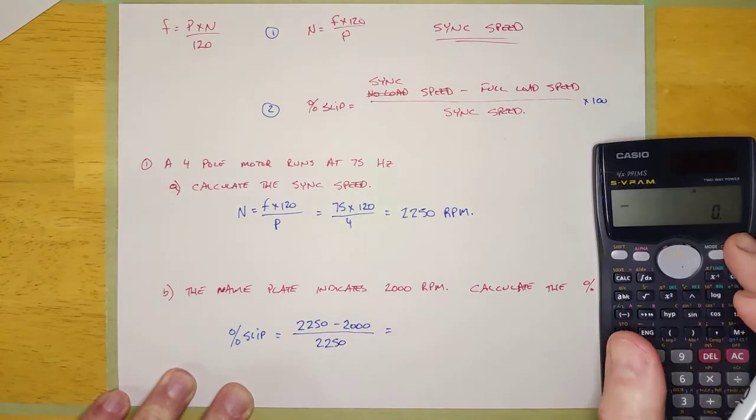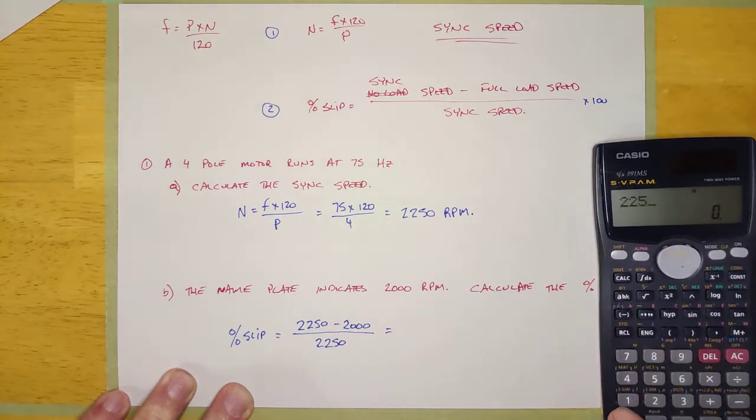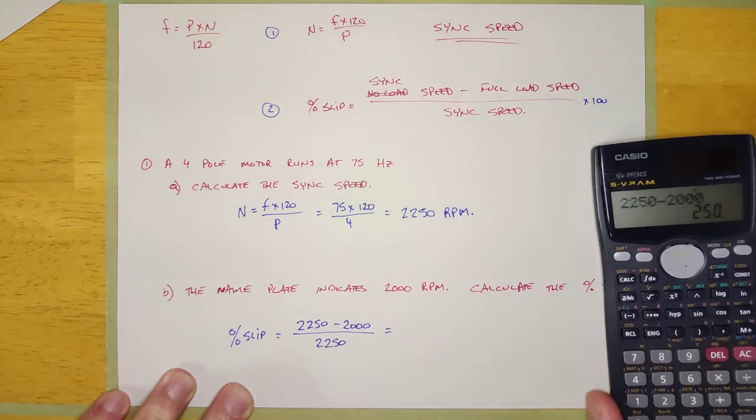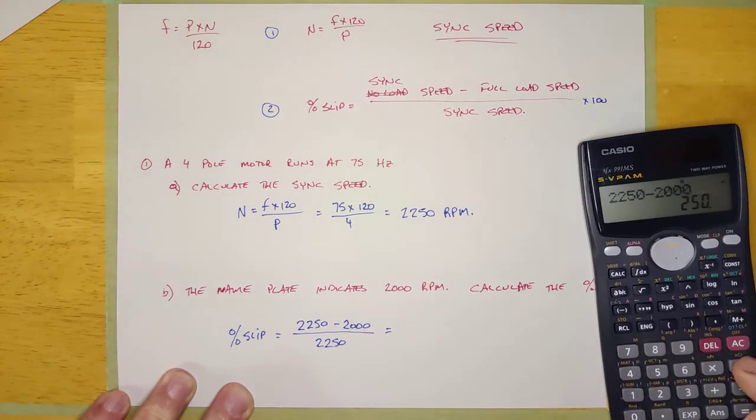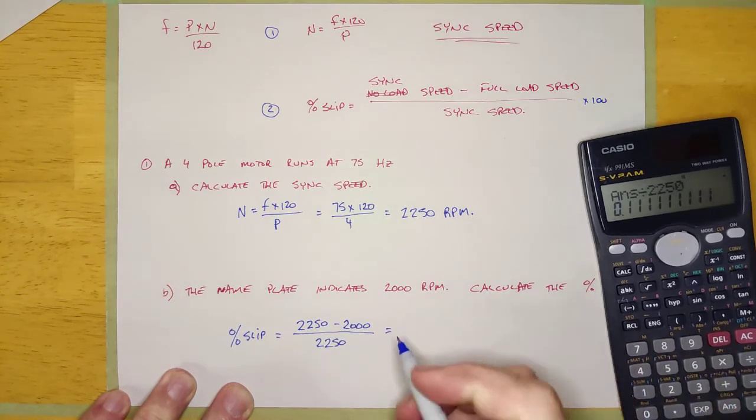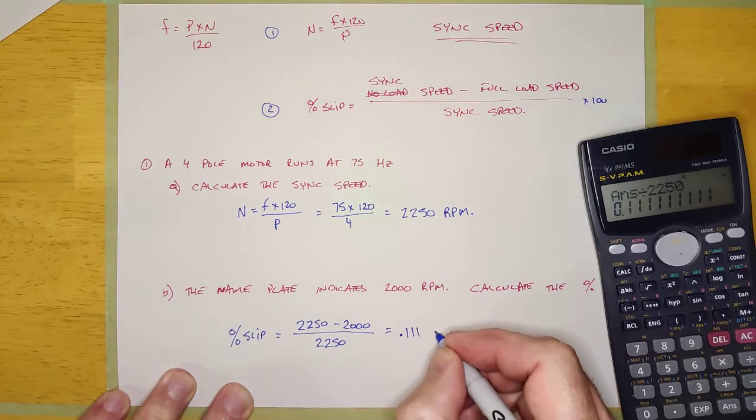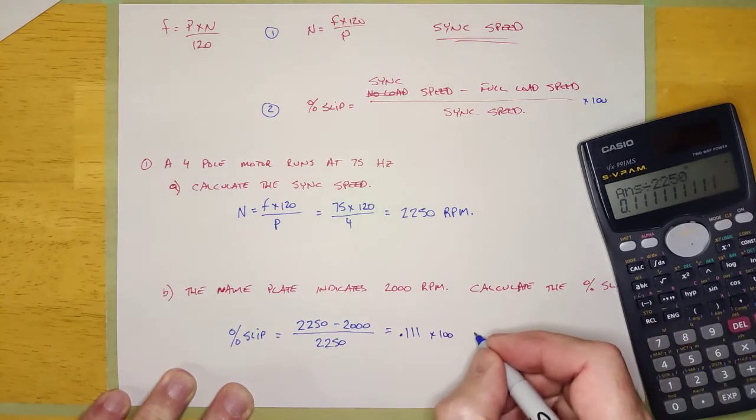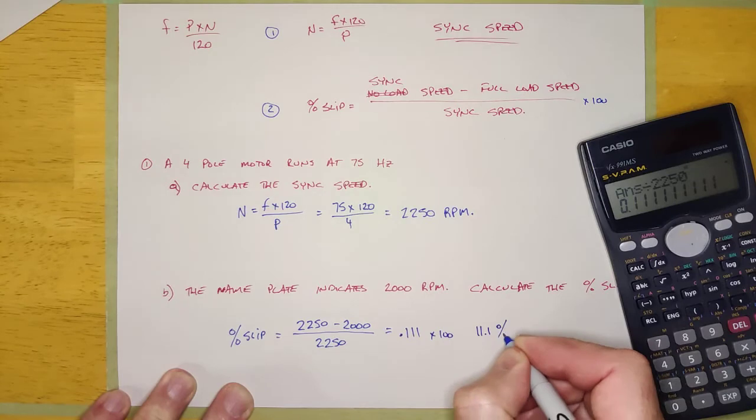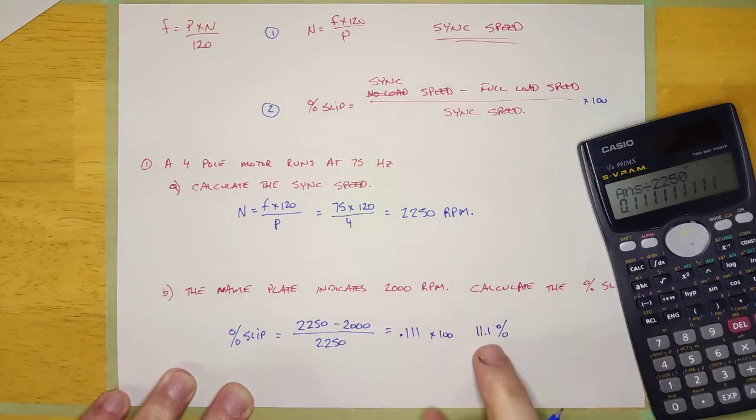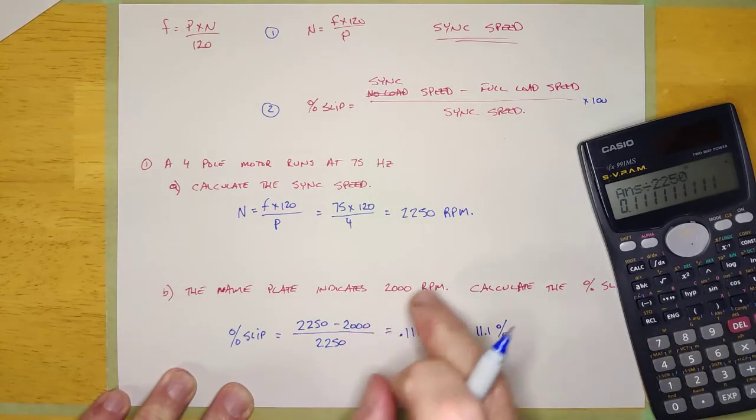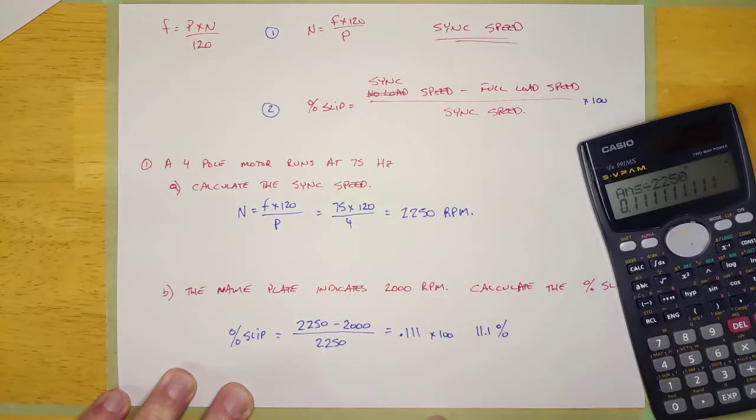And so no big deal. So 2250 minus 2000 equals, that's the 250 RPM it's slipping, and then we're going to divide it by 2250. And we're going to find out that it's 0.111, and then we're going to times it by 100 to get it in a percent, and so it's going to be 11.1%. And that is the percent slip of this particular motor.